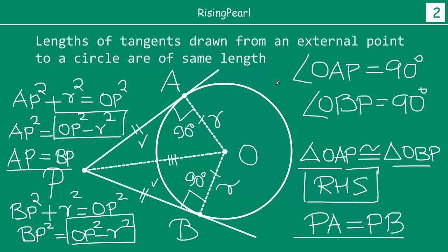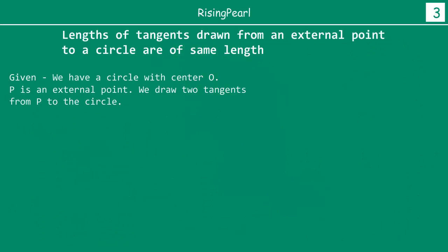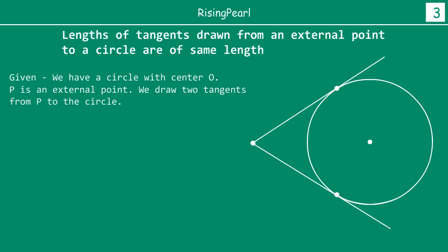For the rest of the webisode we are going to write the proof in a clear way, the way you would write it in the exam, using the more conventional technique. First we write what is given: we have a circle with center O, P is an external point, and PA and PB are the two tangents drawn from P to the circle. Then we write what we have to prove: PA is equal to PB.